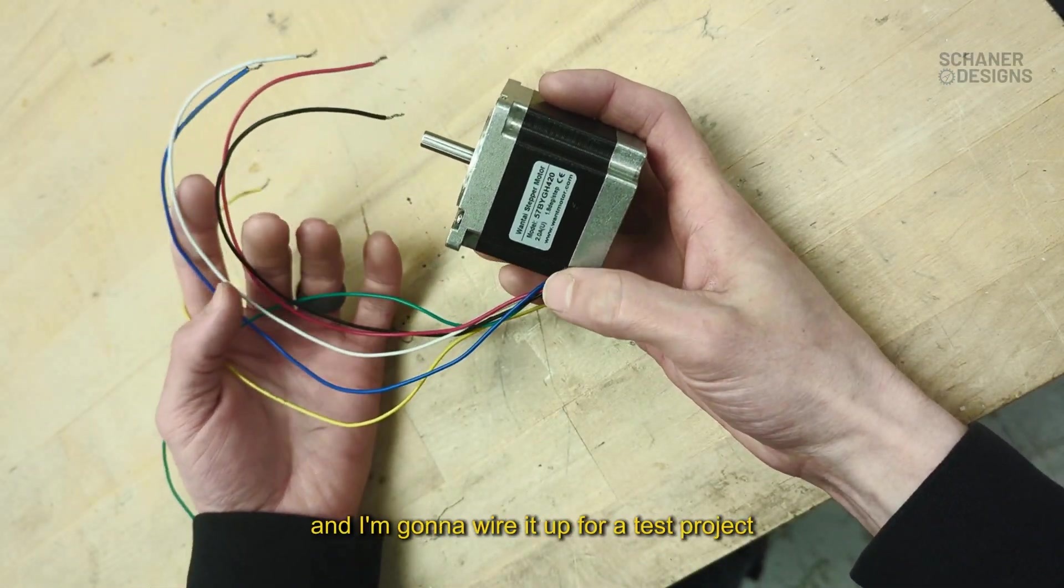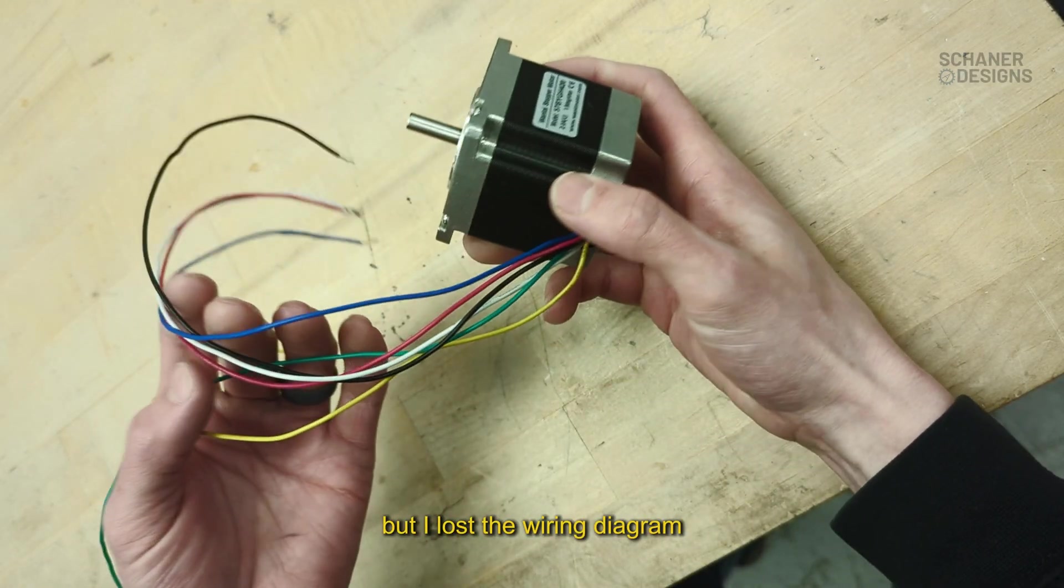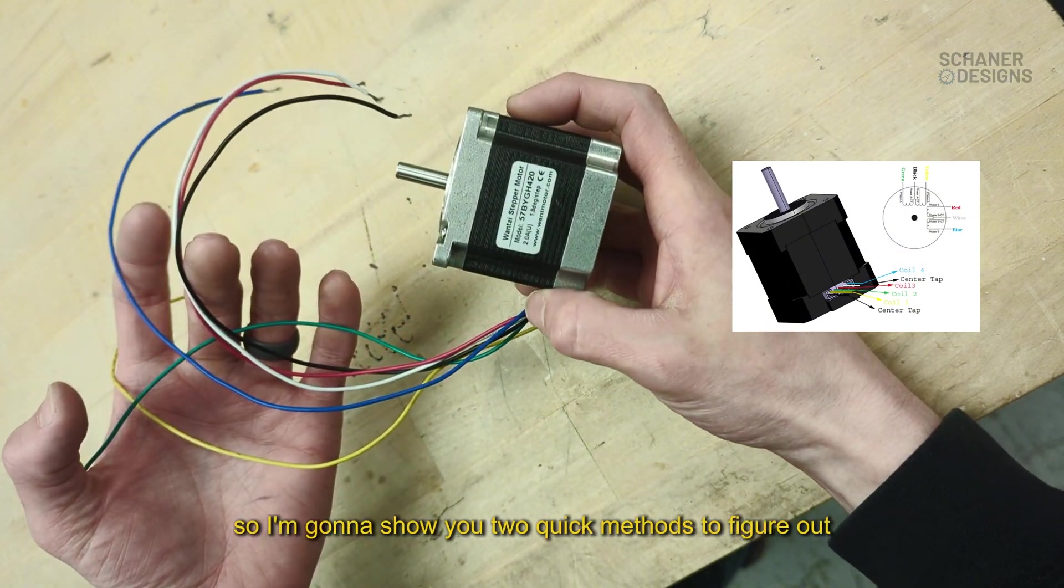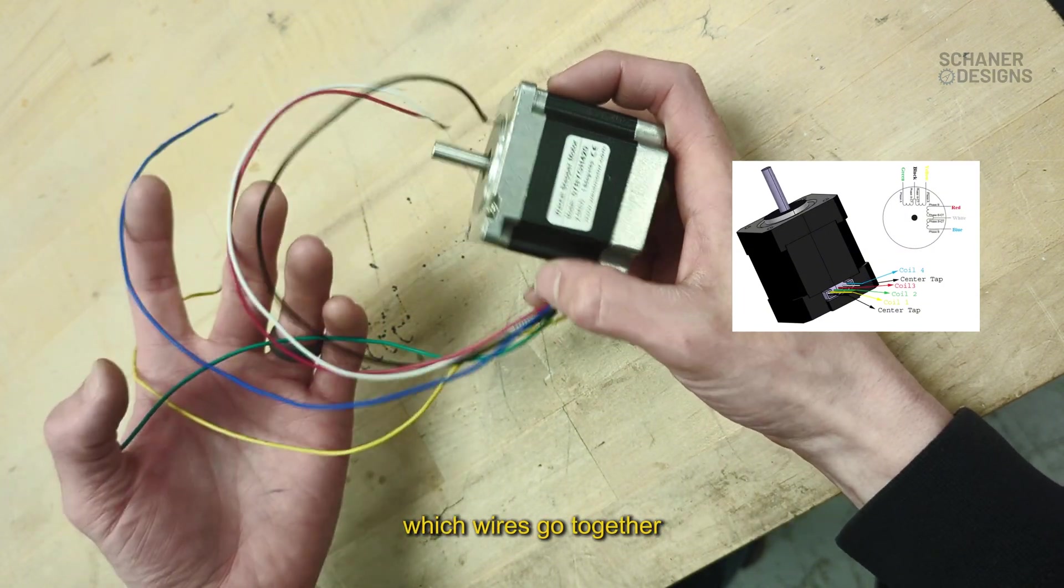I've got this stepper motor here and I'm going to wire it up for a test project, but I lost the wiring diagram. So I'm going to show you two quick methods to figure out which wires go together.